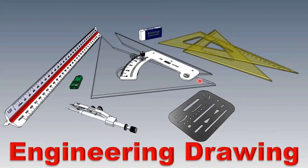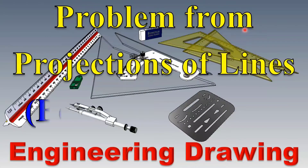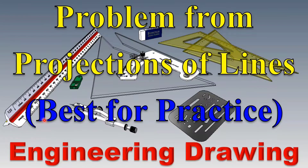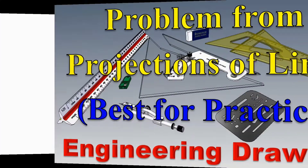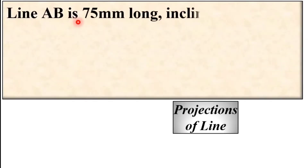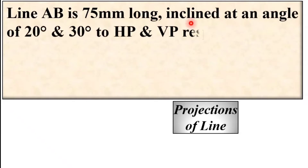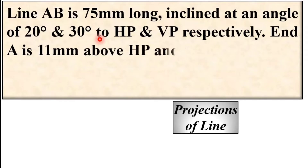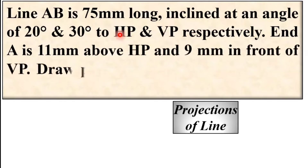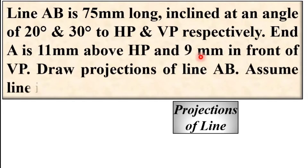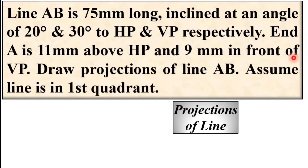Welcome to my engineering drawing playlist. Today I will be explaining a problem from the projections of lines, and this is actually the best problem for practice. Line AB is 75 mm long — that means the true length is given. It is inclined at an angle of 20 degrees and 30 degrees to HP and VP (horizontal plane and vertical plane) respectively. A is 11 mm above HP and 9 mm in front of VP. Draw the projections of line AB. Assume the line is in the first quadrant.